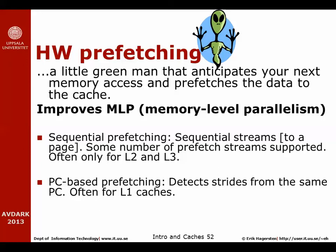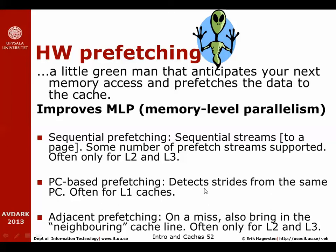The L1 cache has a different prefetch algorithm: PC-based prefetching. Here we try to identify instructions that are frequently accessed — for example, an instruction in a loop — and see if there is a specific access pattern for that instruction, such as accessing data with a constant stride: A, A+16, A+32, and so on. If so, we start a prefetch activity to bring data into L1. This is more precise, which is why it targets L1. It can also detect strides that are not just sequential but of a large constant step. A third algorithm is adjacent prefetching — on a miss for a specific cache line, it automatically brings in neighboring cache lines, used for L2 and L3.